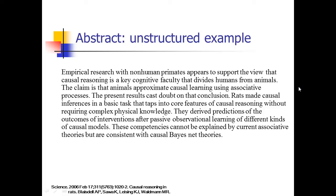Then they give details of both the experiment and the results, rolled into one: 'Rats make causal inferences in a basic task that taps into core features of causal reasoning without requiring complex physical knowledge.' They derive predictions of the outcomes of interventions after passive observational learning of different kinds of causal models, and these competencies cannot be explained by current associative theories but are consistent with causal-based network theories. So they've got all the key points packed into a very short space.